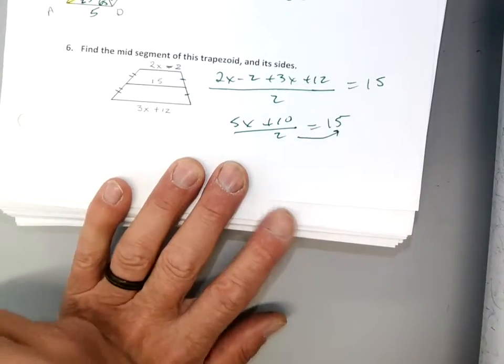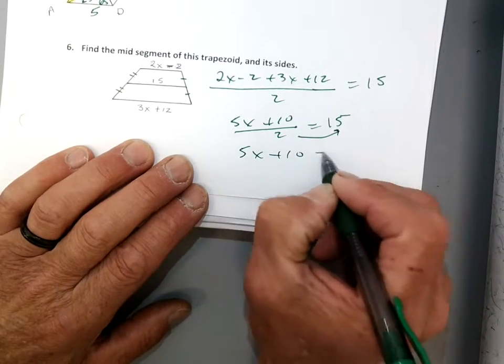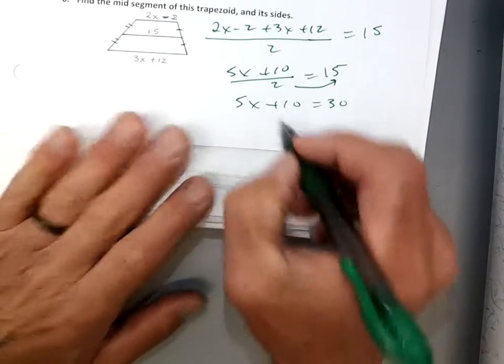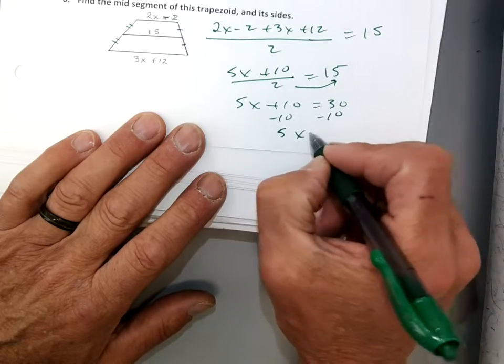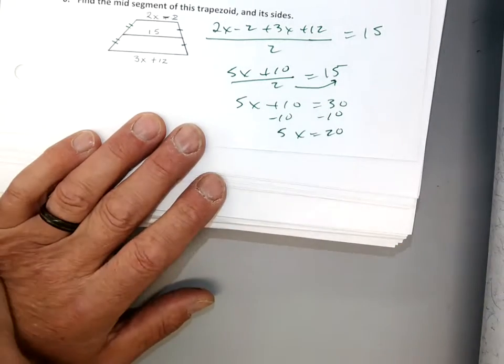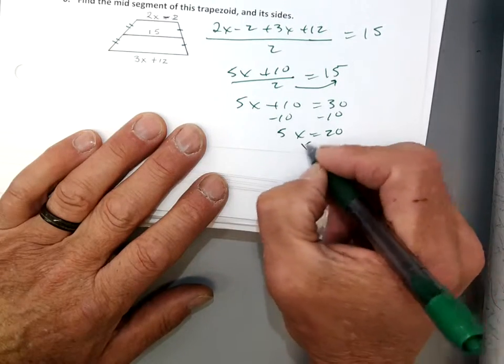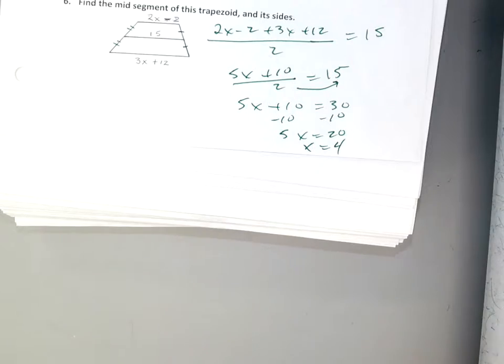Just added my x's. A negative 2 and 12 is 10, okay? Now I'm going to multiply by 2, okay? I'm going to get 5x plus 10 equals 30, okay? Minus 10, minus 10, 5x equals 20. I know it kills you. Divide by 5, x is 4, okay? But that's not the answer yet, not the answer yet.